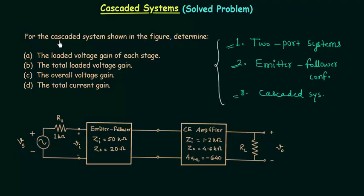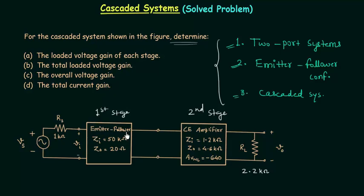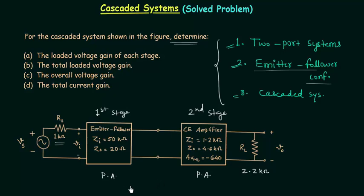I will first read the problem, then we will solve it. For the cascaded system shown in the figure: this is the first stage, this is the second stage, and RL is the load resistance equal to 2.2 kilo ohms. The first stage is the emitter follower stage. RS is the source resistance equal to 1 kilo ohm, VS is the source voltage, VI is the input voltage, and VO is the output voltage. The required parameters are given in each packaged amplifier circuit — we only need input/output impedances and the no-load voltage gain.